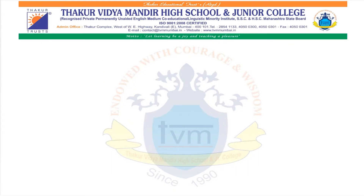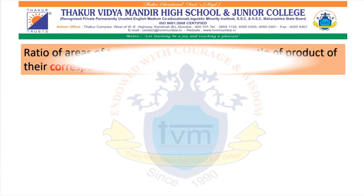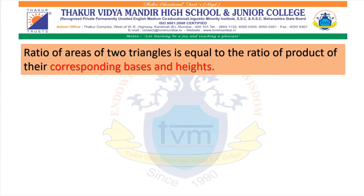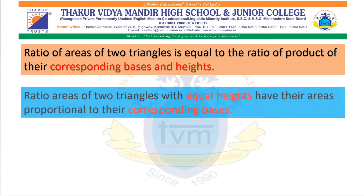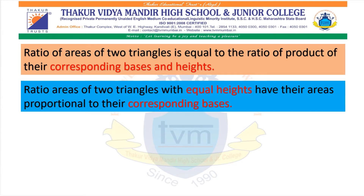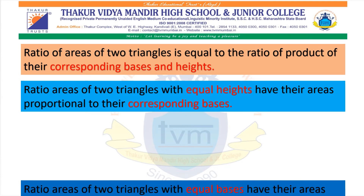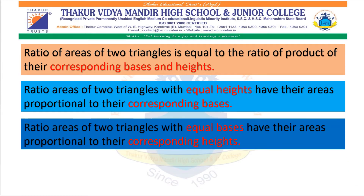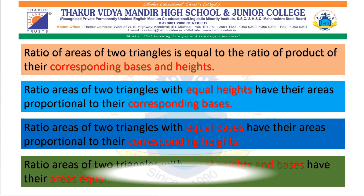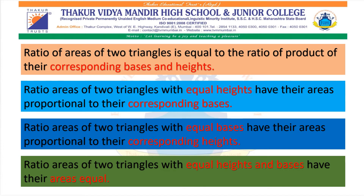Let us revise what we have done in the last class. We did 4 ratios related to the ratio of areas of 2 triangles. The first one: the ratio of areas of 2 triangles is equal to the ratio of the product of their corresponding bases and heights. Second: if two triangles have equal heights, the ratio of their areas is proportional to their corresponding bases. Third: if bases are equal, it is proportional to their corresponding heights. And the last one: if two triangles have equal heights and bases, their areas are also equal.